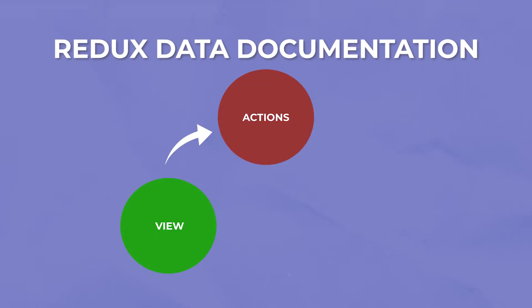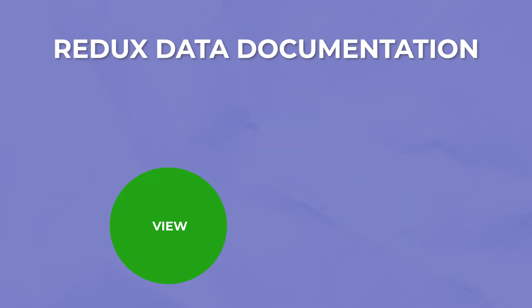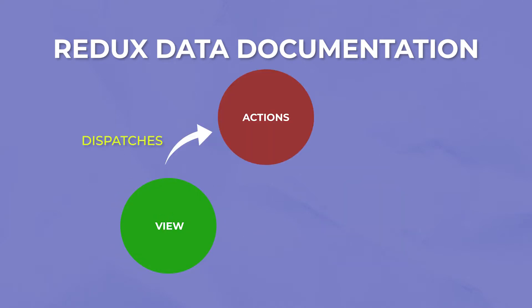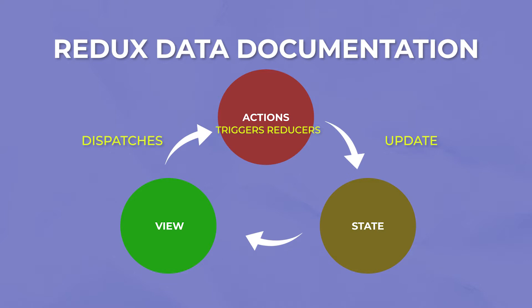The Redux documentation has a great graphic showing a circular flow: you have your view, you have actions, you have the state. The view dispatches actions, which are like event handlers. The actions trigger reducers, which update the state, and then the state updates trickle back down into the UI. It's a circular pattern that exists forever — that's the connection between events in a UI and updates to the UI.